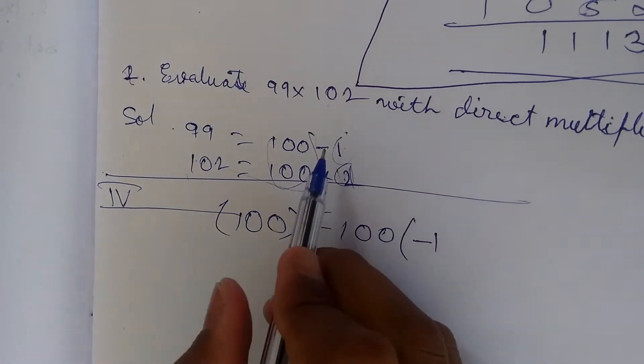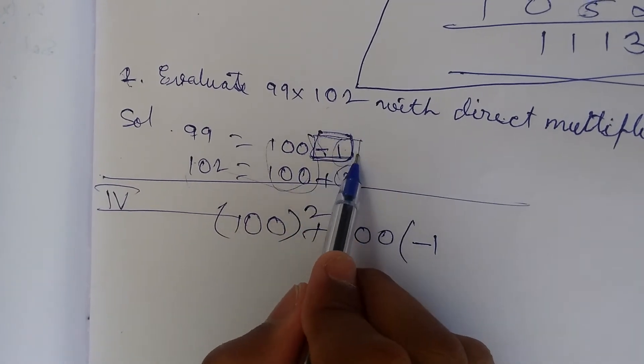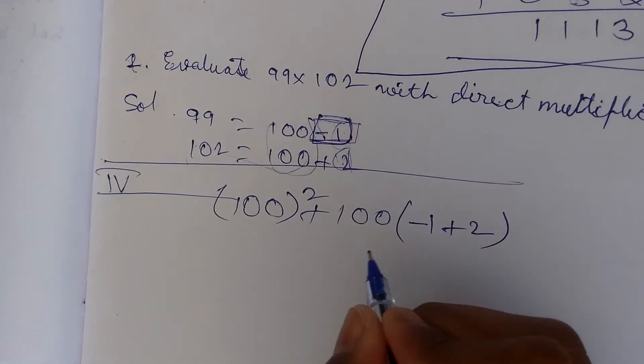Here you will take minus 1 because it is a complete number, plus 2, and plus minus 1 into 2.